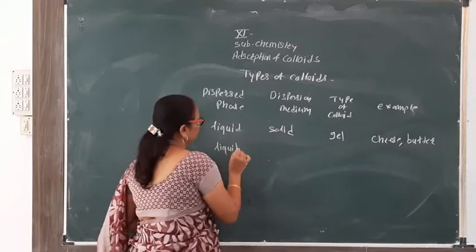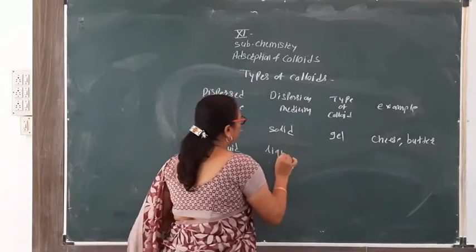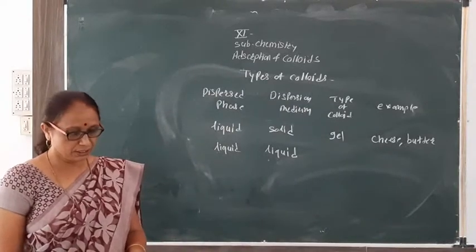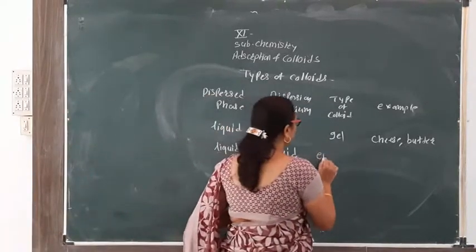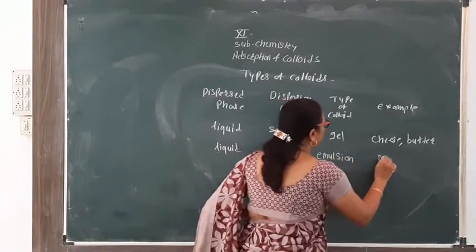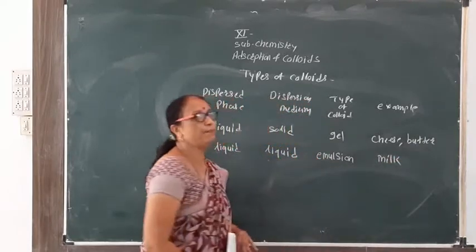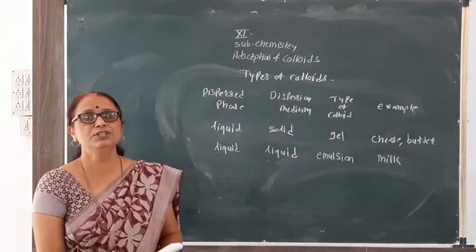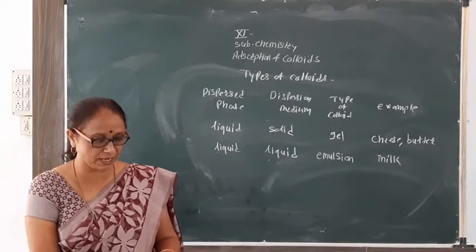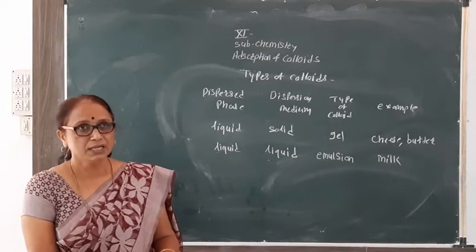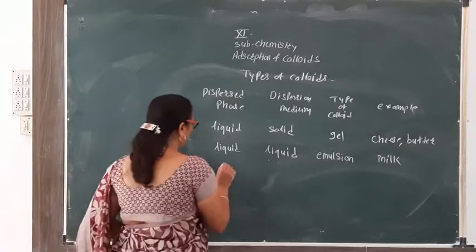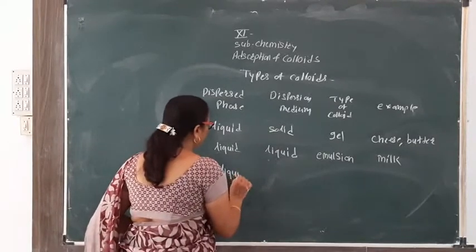When both the dispersed phase and the dispersion medium are liquid, the colloidal system is called an emulsion. Milk and hair cream are examples of emulsion.